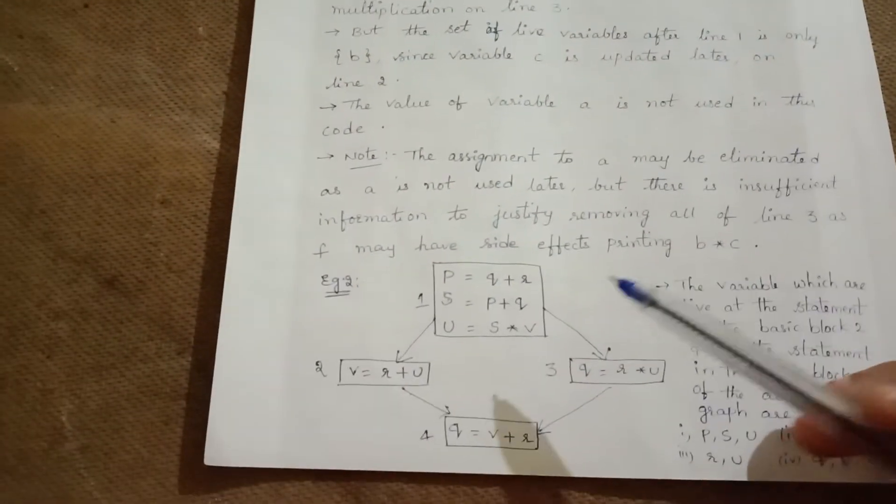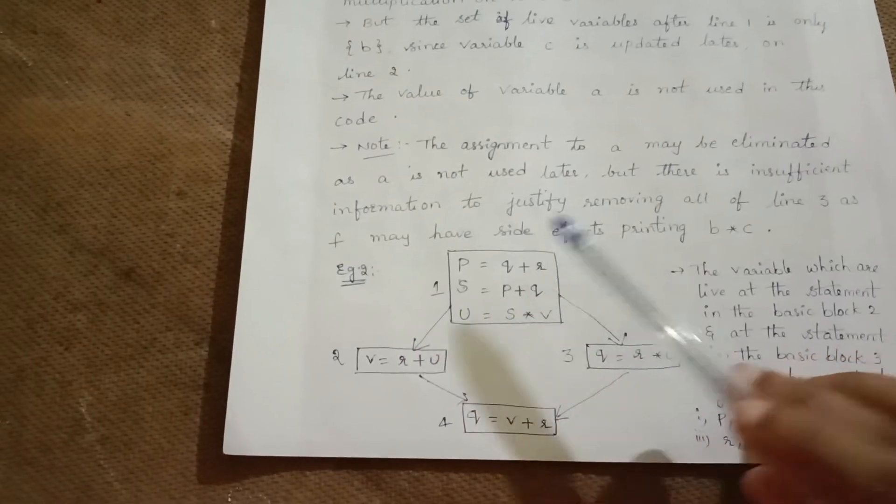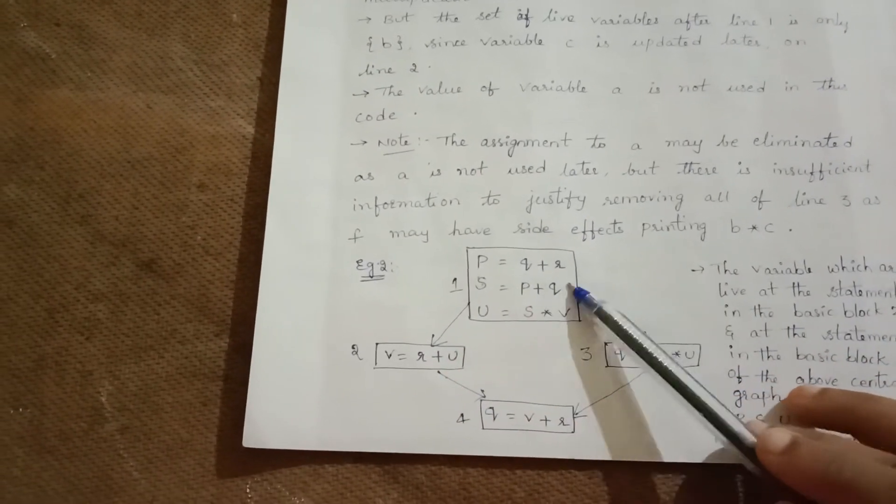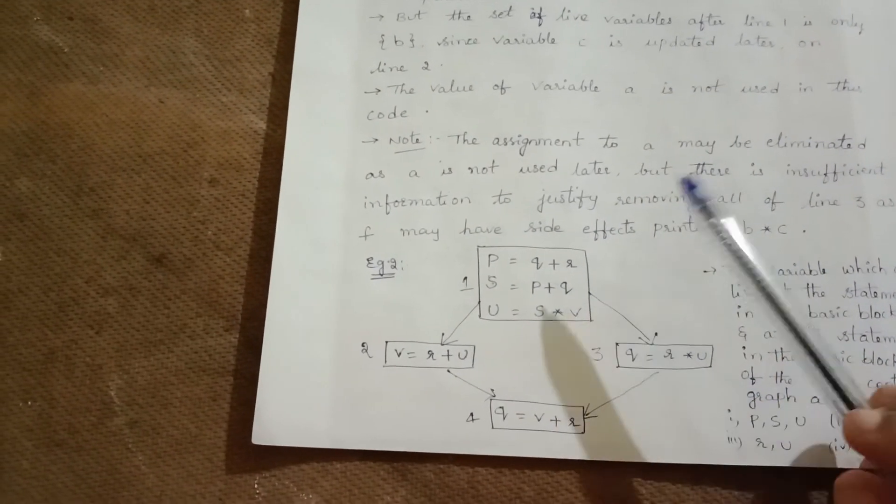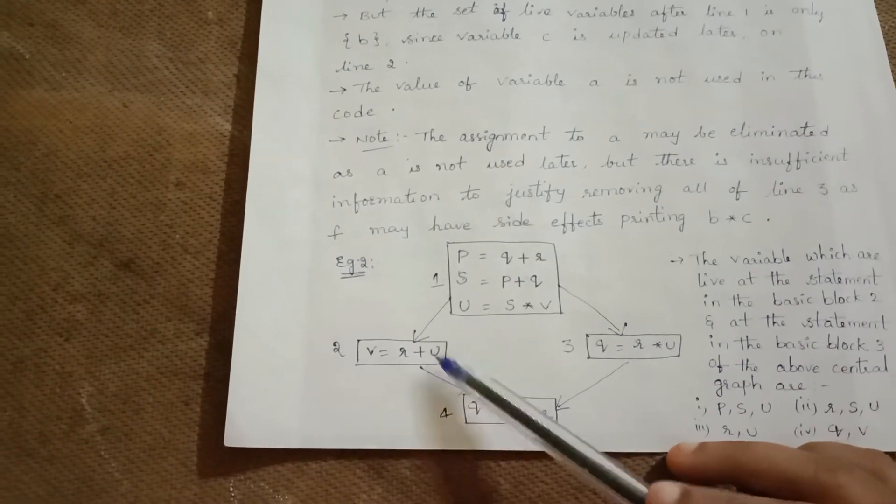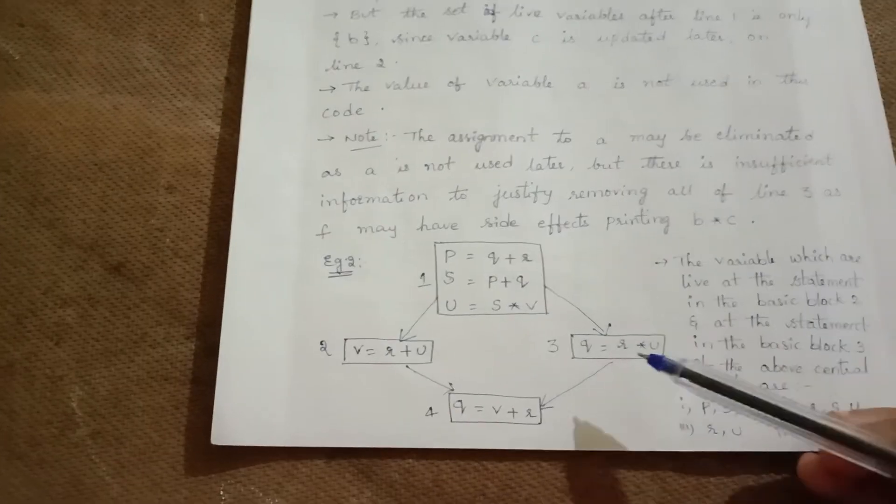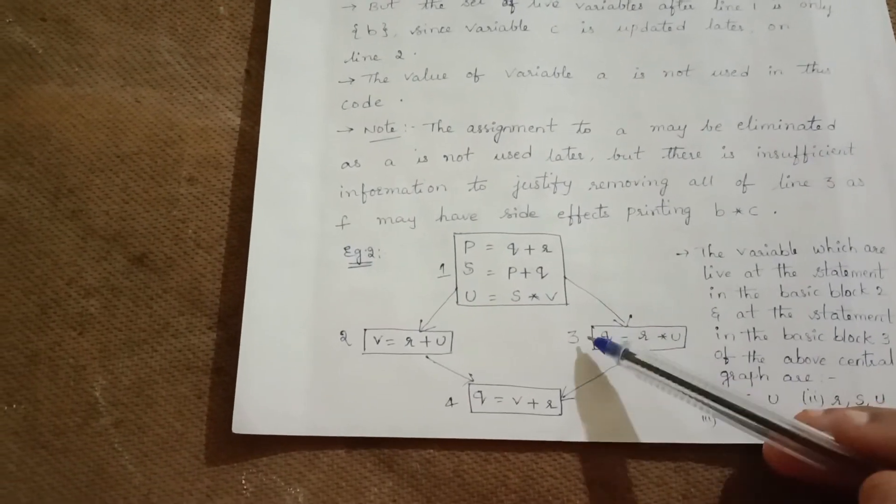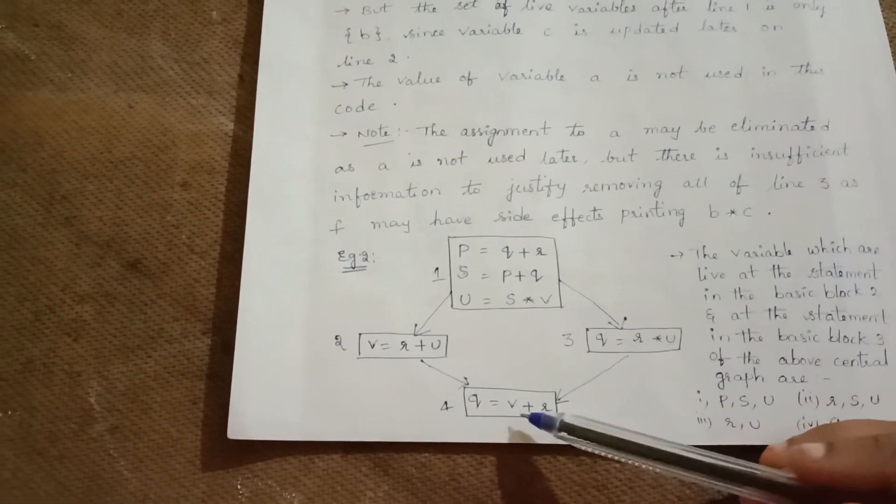This example has: Block 1: p = q + r, s = p + q, u = s × v. Block 2: v = r + u. Block 3: q = r × u. Block 4: q = v + r.